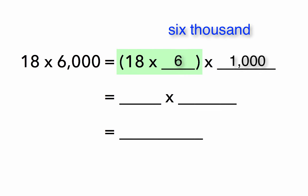Now let's go ahead with the order of operations and multiply within the parentheses first. Pause the video and do your long multiplication. 18 times 6 is 108. 108 times 1,000 is 108,000.